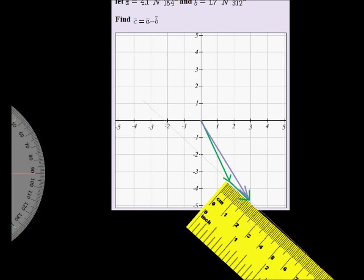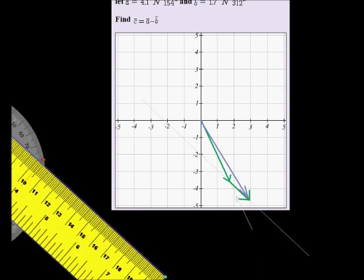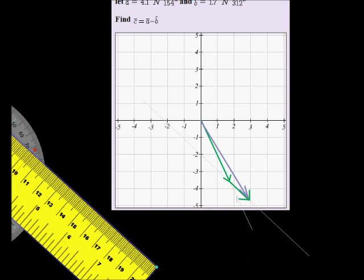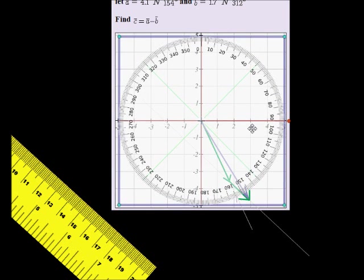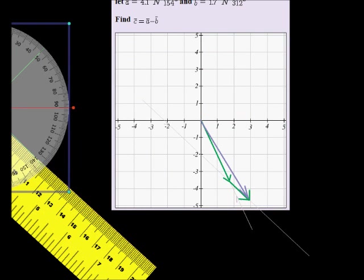Let's go and read off the magnitude and the direction of our resultant vector. To find the direction, place your protractor on it and read off the direction. We see the direction here seems to be about 147 degrees, more or less. That's a good estimate, 147 degrees. That's the bearing.